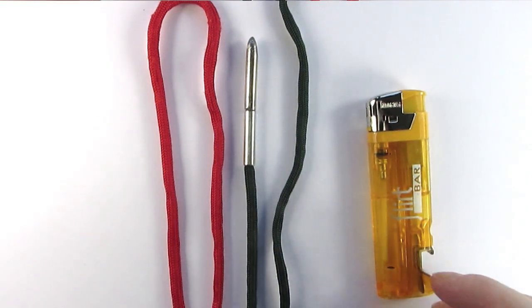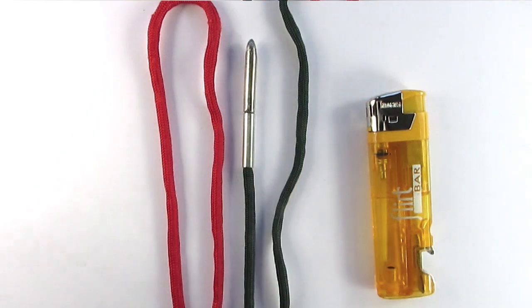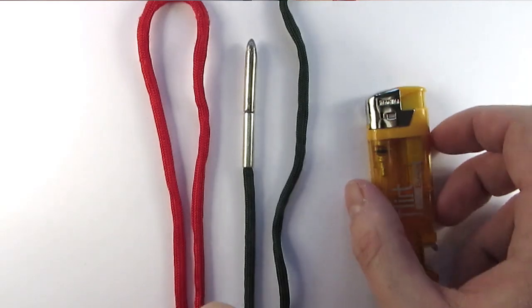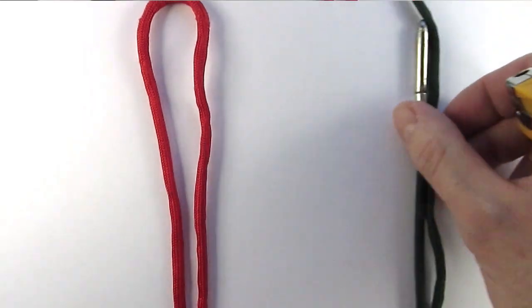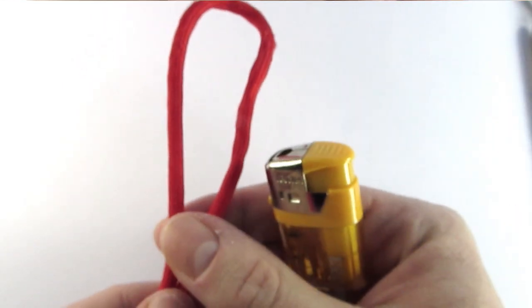We're obviously going to need a lighter but we're also going to need some working cord onto which I've attached a lacing needle and a smaller piece of paracord which I'm going to tie around the neck of the lighter to provide the base onto which I can tie the hitches.